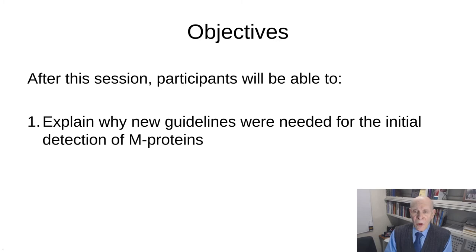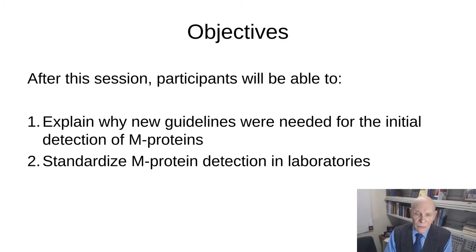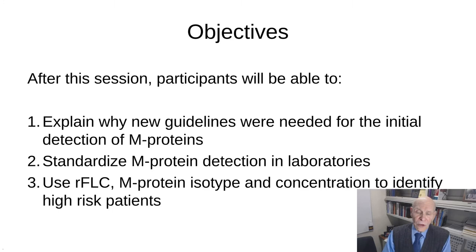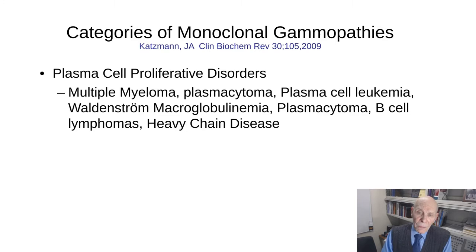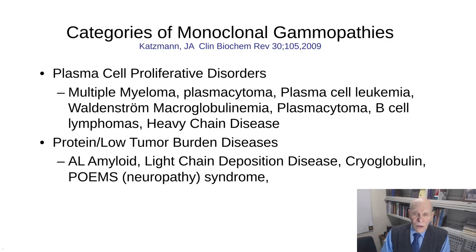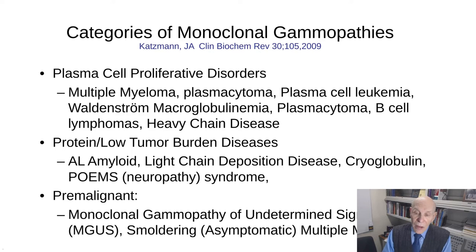Today I hope you'll be able to explain why we needed to produce these guidelines and use them to standardize M protein detection in your laboratories, and use features like the ratio of free light chains, M protein isotype, and concentration to identify patients at highest risk. Monoclonal gammopathies are a complex group of diseases. Jerry Katzman categorized them into three groups: neoplastic diseases treated due to plasma cell proliferation (multiple myeloma, Waldenström's); low tumor burden diseases where the protein deposits, such as AL amyloid or neuropathy syndromes; and premalignant conditions like MGUS or smoldering multiple myeloma.